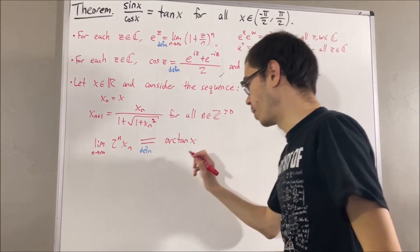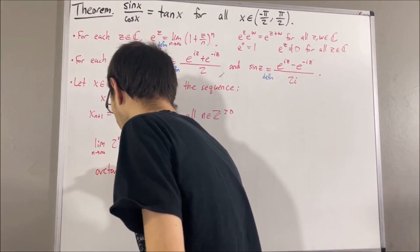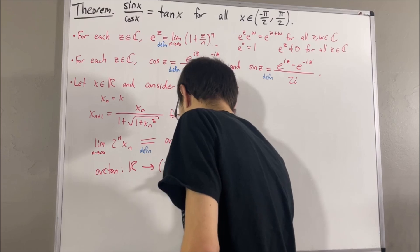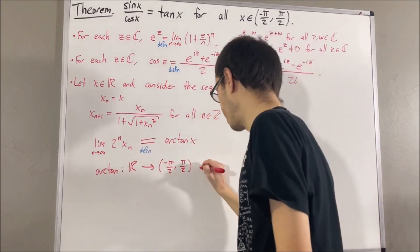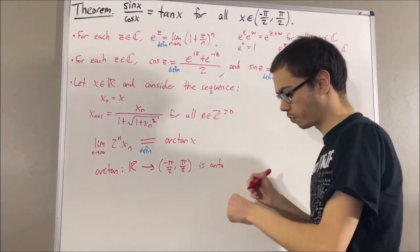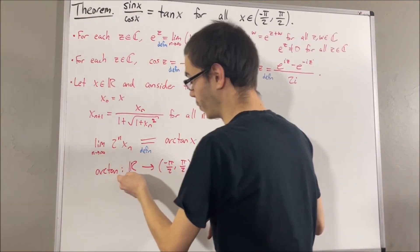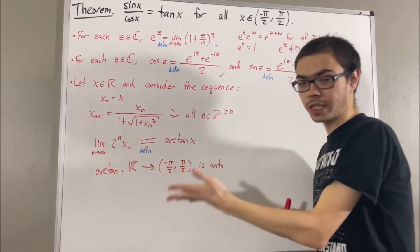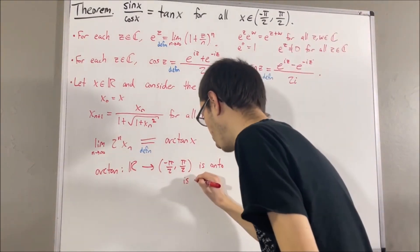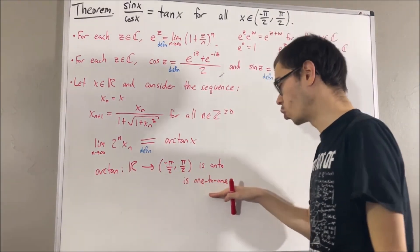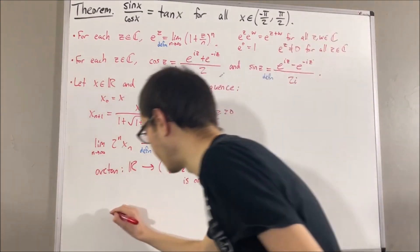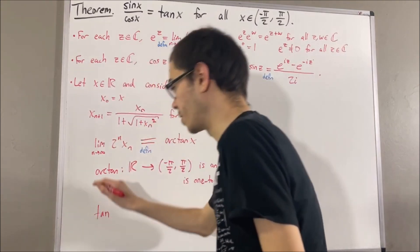In regards to pi, we proved that the arctangent function maps from the real numbers onto the open interval negative pi over 2, comma pi over 2. Another property we proved is that the arctangent function is strictly increasing, which tells us it is one-to-one. And because arctangent is both one-to-one and onto, that told us that arctangent has an inverse function. And we defined tangent to be the inverse of arctangent.